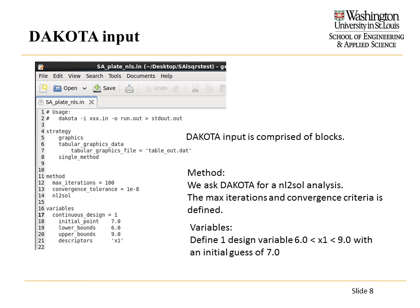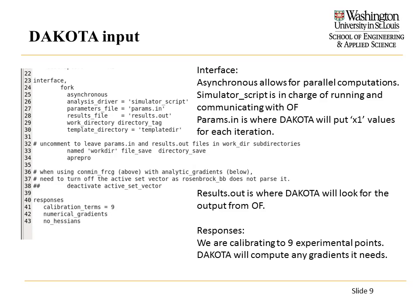For variables, we have one continuous design variable bounded from 6 to 9 with an initial starting guess of 7.0. The interface block tells DAKOTA what files it's looking for and what files it's going to create, and what's controlling the external DAKOTA functionality. Asynchronous mode allows it to run in parallel — there's a whole chapter on optimizing parallel optimization procedures in the DAKOTA manual. Our driver script is the simulator script; what DAKOTA creates is params-in, and what it reads is results-out.